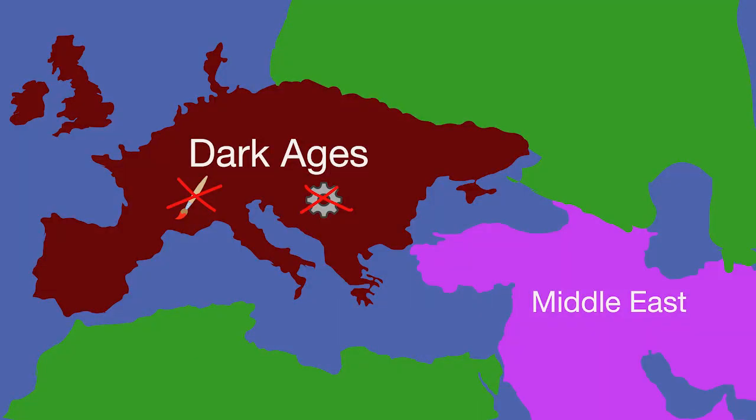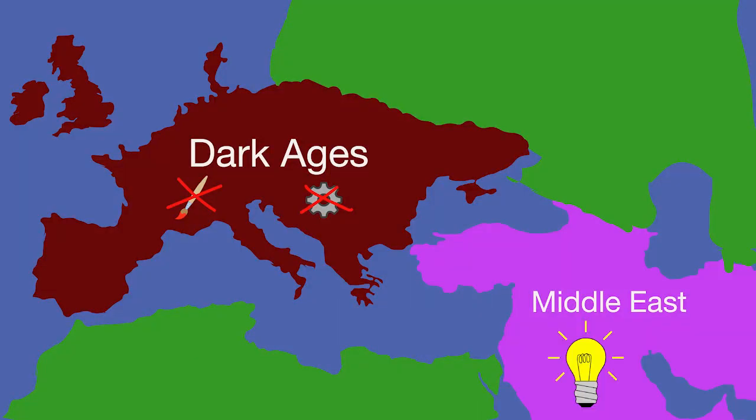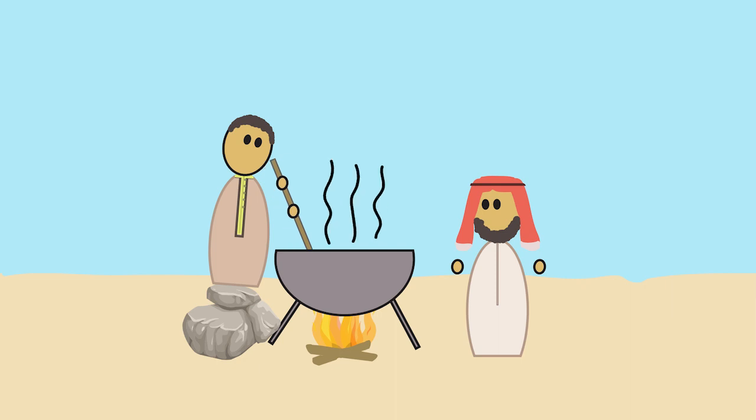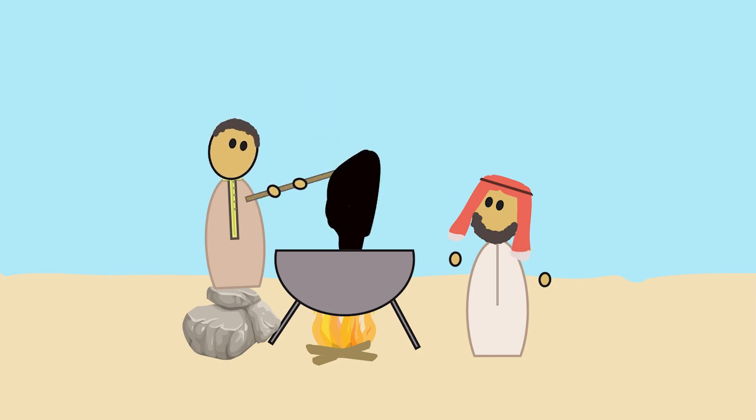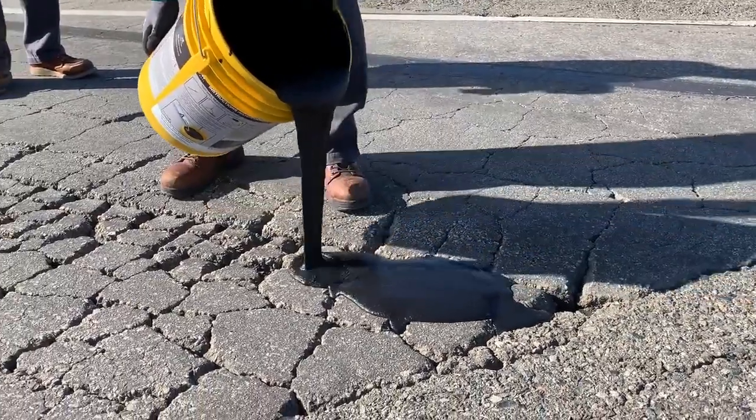However, in the Middle East, new road technology was being discovered. Middle Eastern engineers discovered that heating petroleum from oil fields produced a dark, heavy, thick residue. When this residue dried, it became very firm and resilient. This petroleum residue was tar.